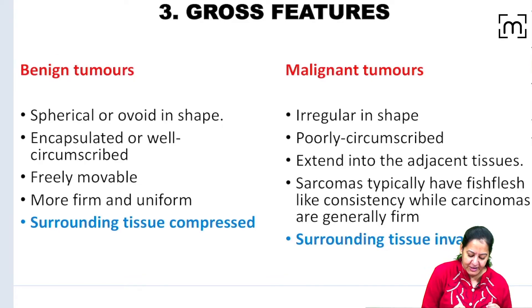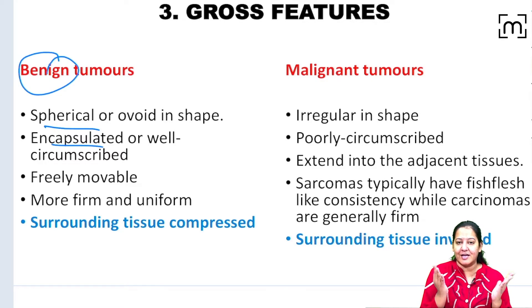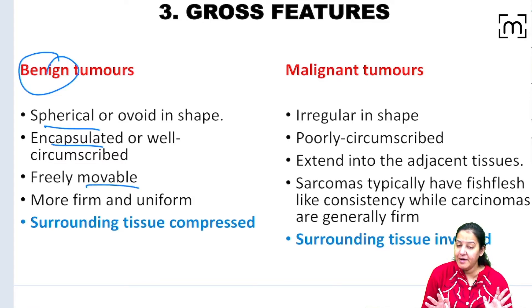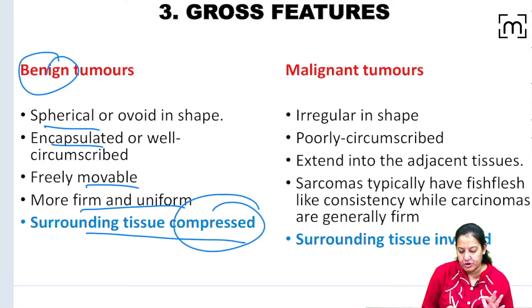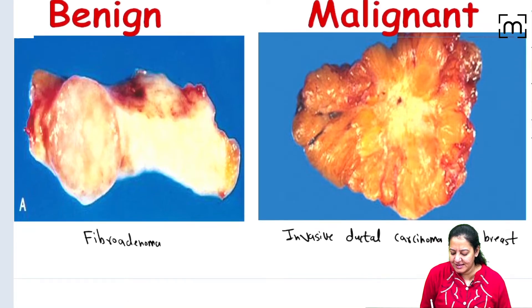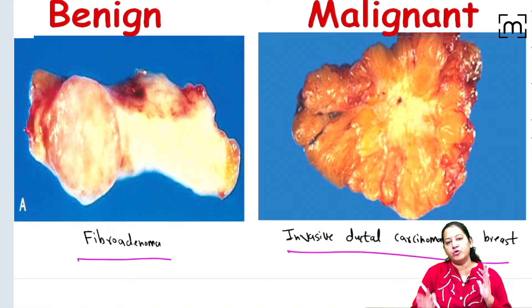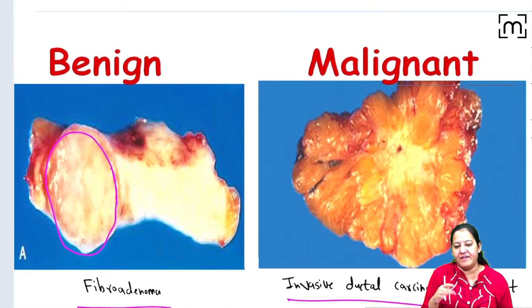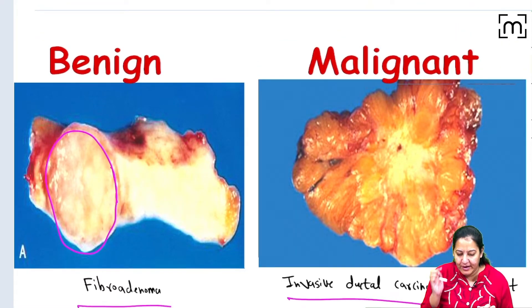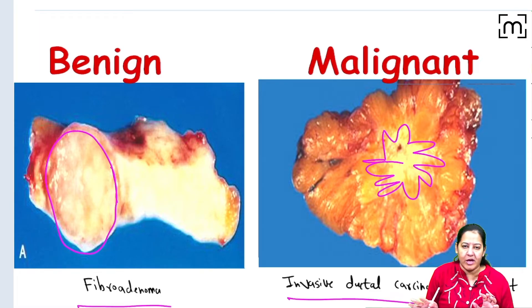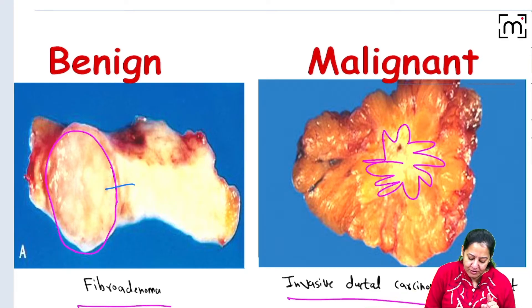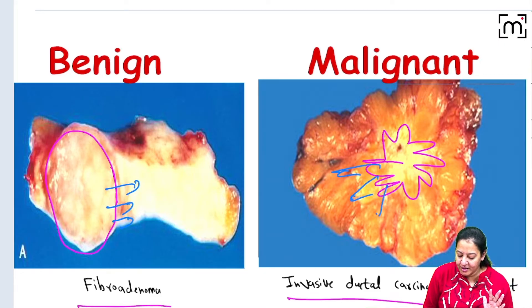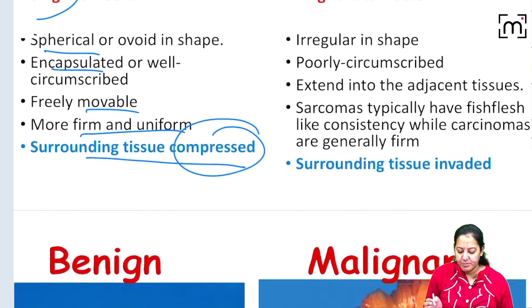Based on gross findings, benign tumours are spherical or oval in shape, well circumscribed and encapsulated, freely movable, firm, and uniform — they compress the surrounding tissue. Looking at a diagram comparing breast benign and malignant tumours, the benign one is well circumscribed, encapsulated, and oval. The malignant one has no fixed shape, no capsule, no circumscription — it is invading into the surrounding tissue.